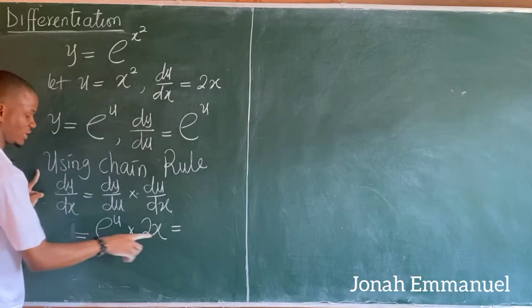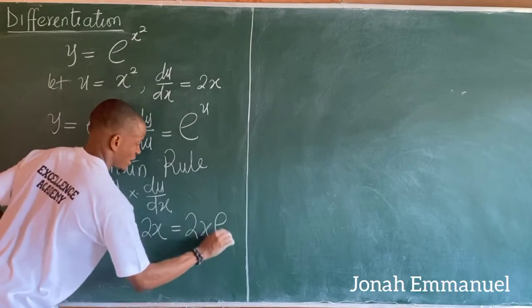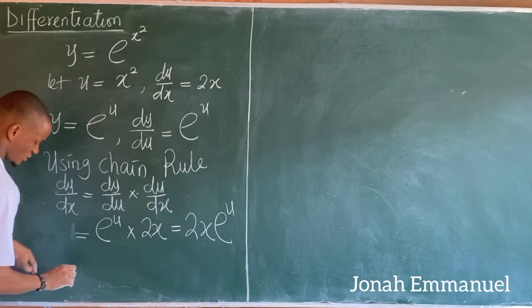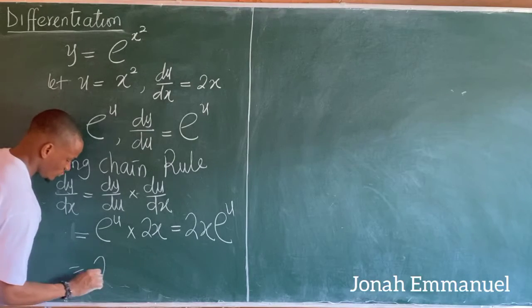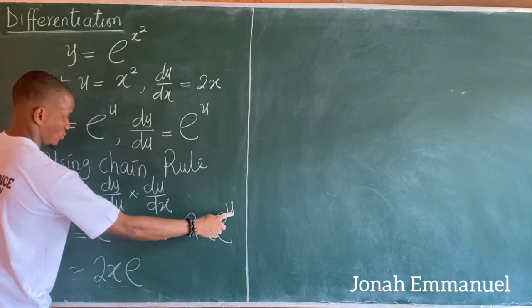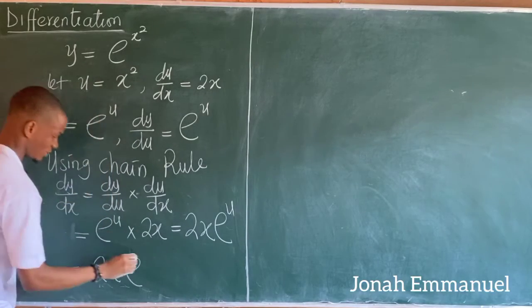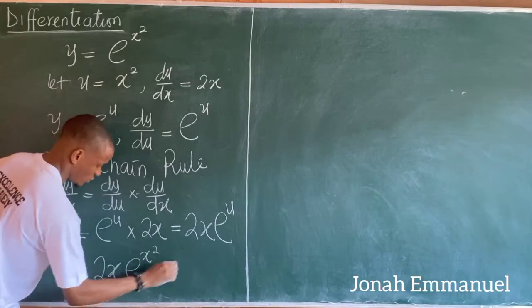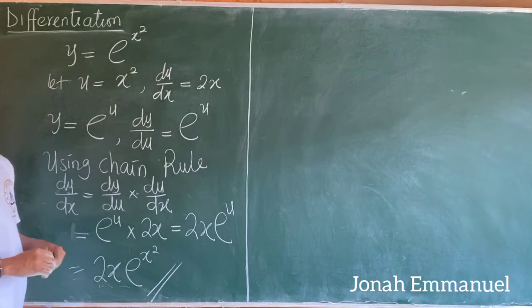This now gives you 2x exponential u. But u is equal to x squared, so I'm having 2x exponential x squared as my answer.